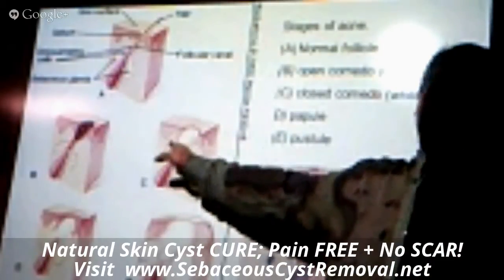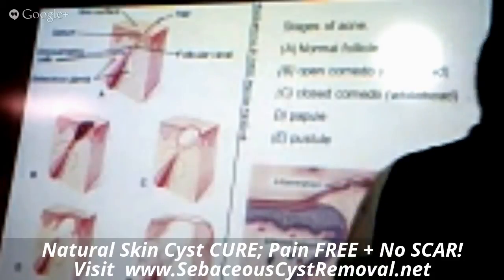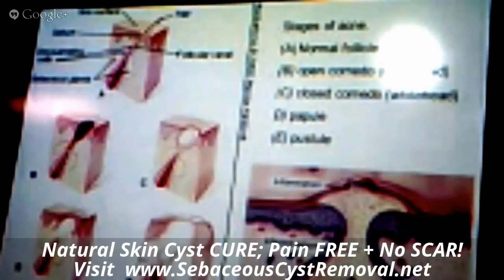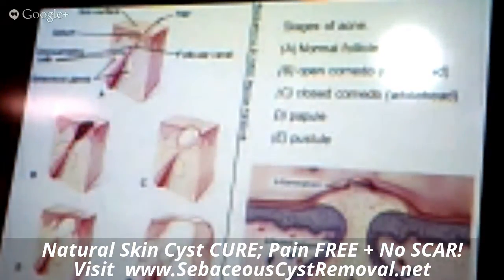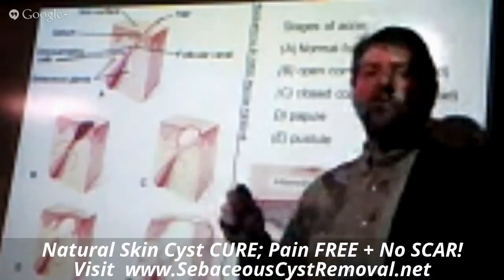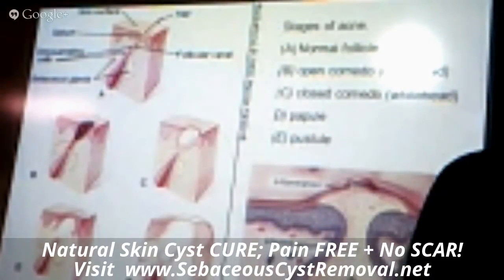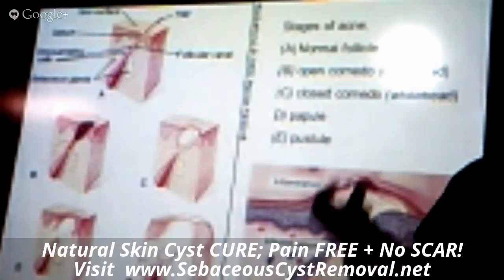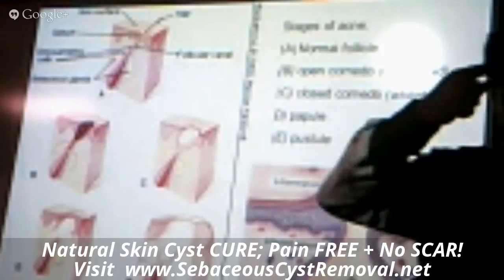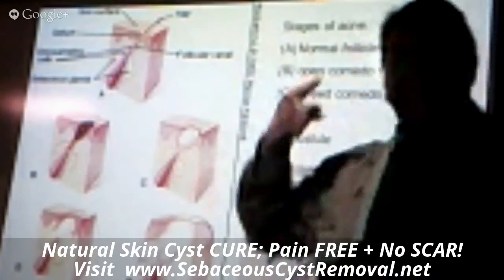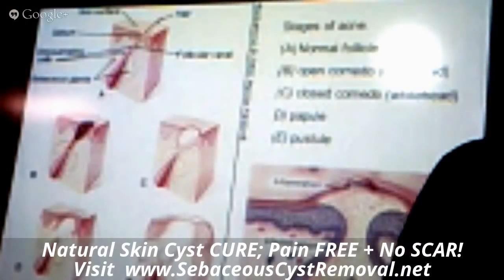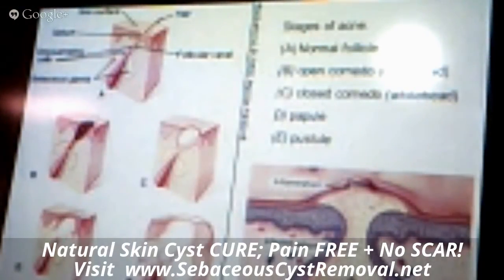An actual zit contains pus, which is a mixture of your own dead white blood cells that died doing battle with the bacteria, along with quite a bit of the bacteria itself. There's a strong temptation to squeeze zits when they get to a certain size — you can feel the pressure and have this desire to relieve it, sometimes aiming for the mirror.